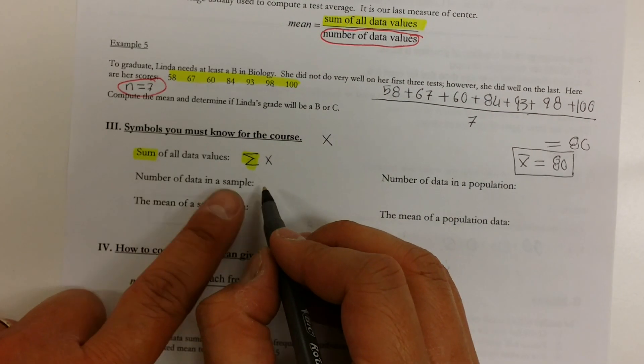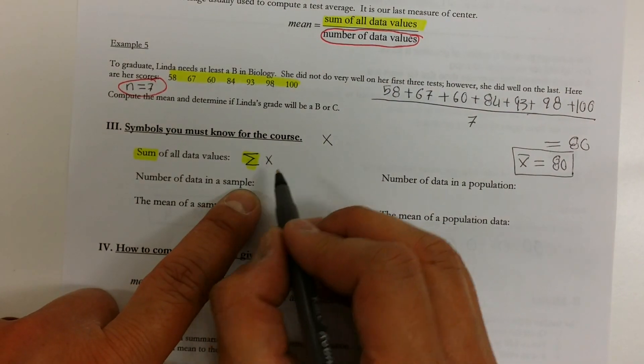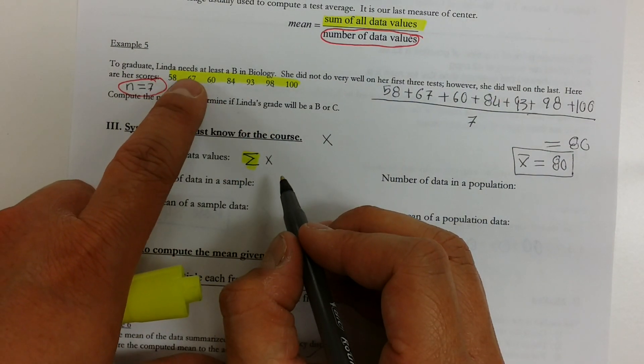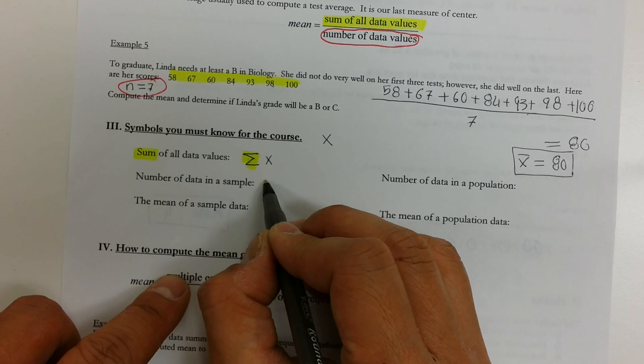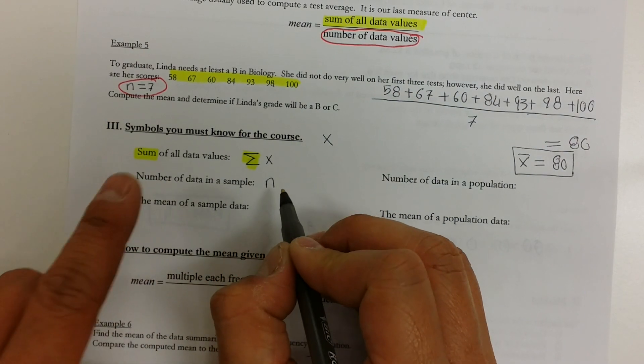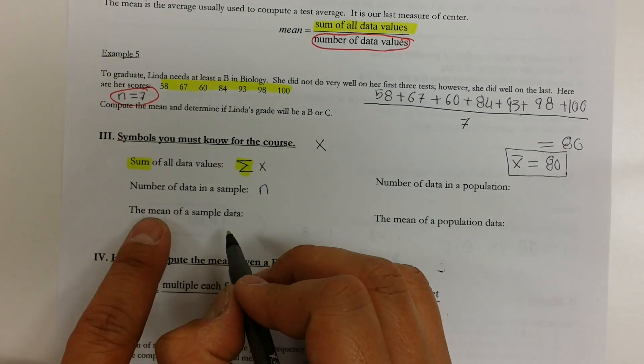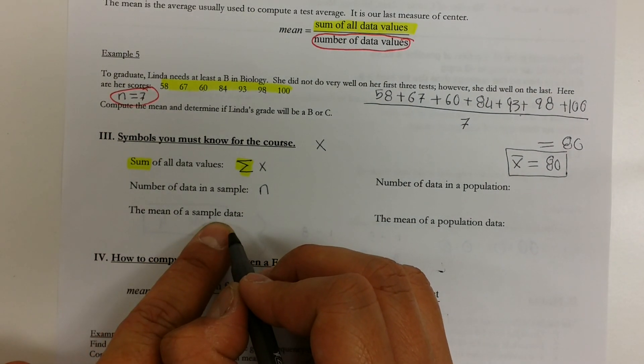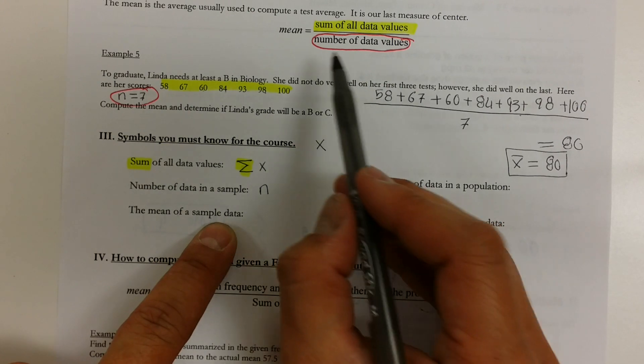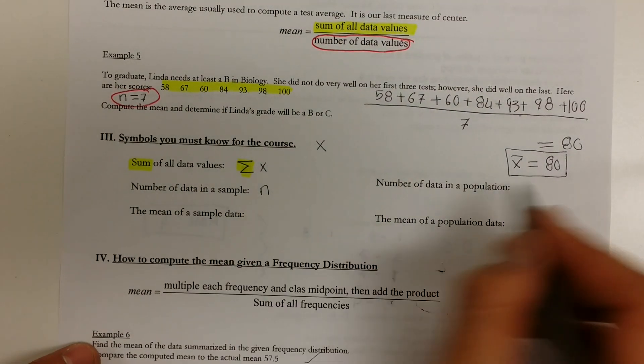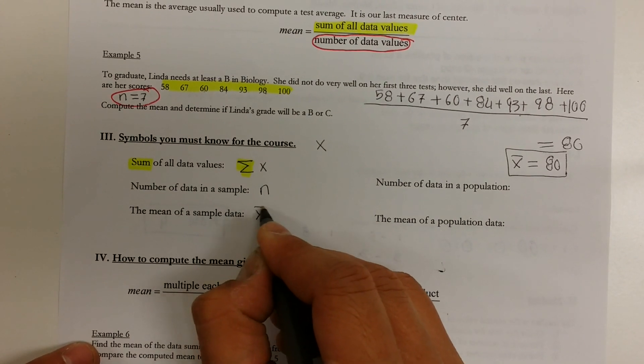The number of data in the sample, notice that in this sample, she took 7 tests. So the number of data is 7. That is represented by the letter n. Again, the mean of the sample, we found it earlier by adding up these numbers and then dividing it by 7. So we found the mean and it happens to be 80. The symbol for that is X bar.